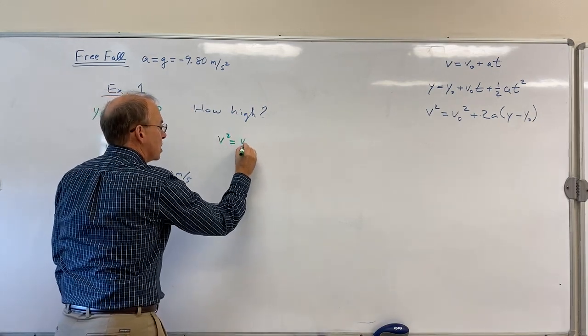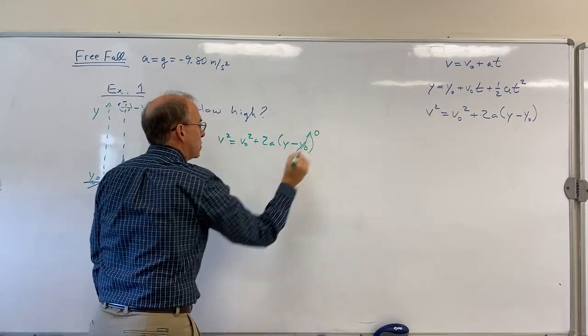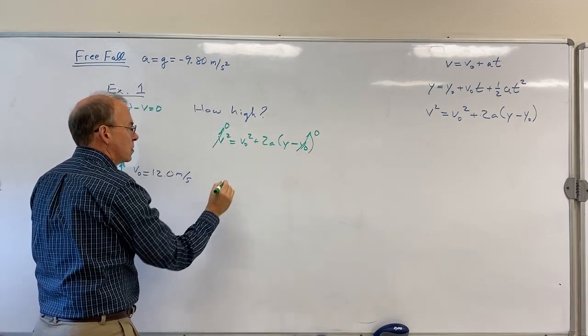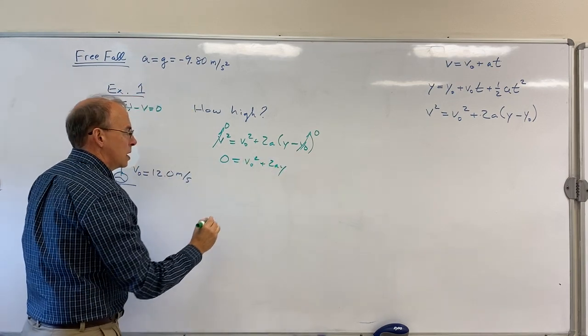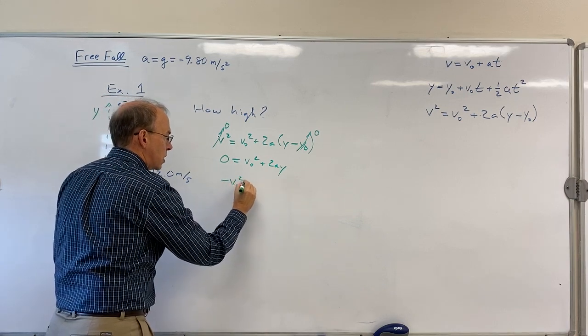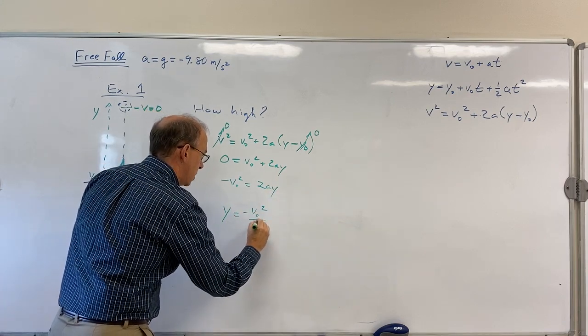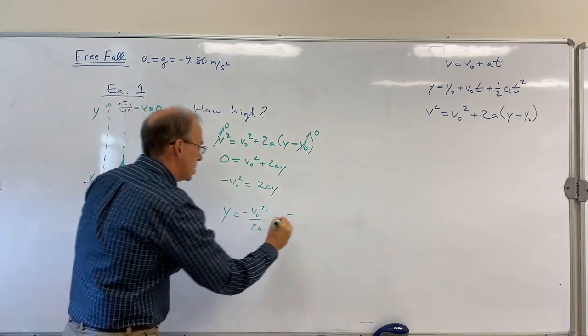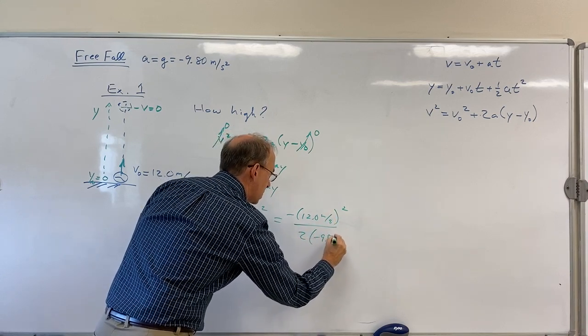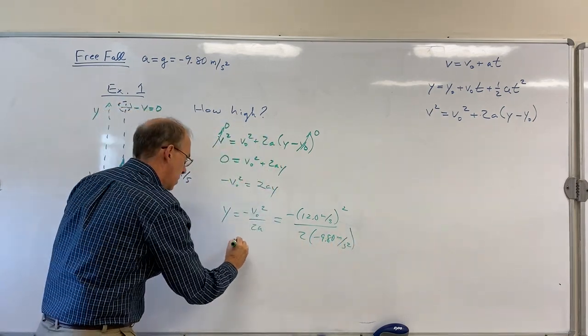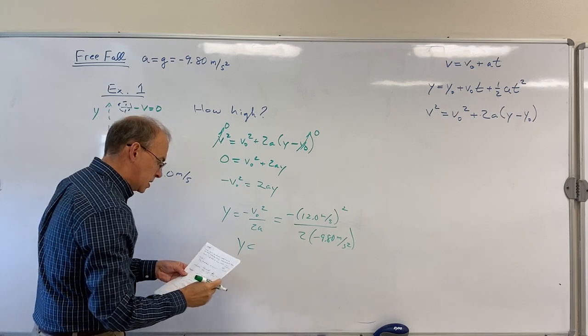v² = v₀² + 2a(y - y₀). We chose y₀ to be zero. V at the top of the path is zero. So we just get 0 = v₀² + 2ay. Solve that for y. We get -v₀² = 2ay or y = -v₀²/2a. That's -12 meters per second squared over 2 times -9.8 meters per second squared, because we now know what a is. And this gives us a maximum height of 7.35 meters.